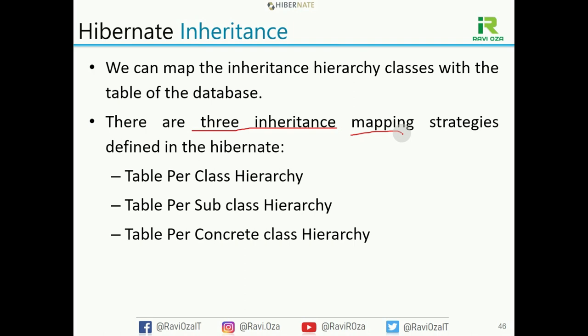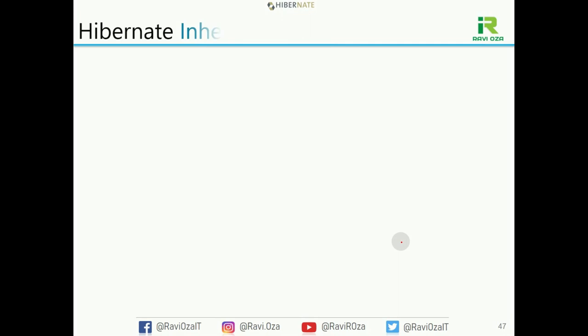It is not just inheritance but inheritance mapping strategies. Java supports inheritance, but how to map them? The three strategies available in Hibernate are: table per class hierarchy, table per subclass, and table per concrete class. These three strategies are part of the JMR syllabus.